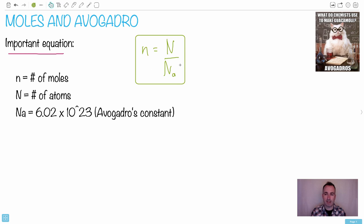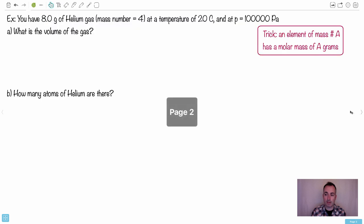I hope that'll make some sense. What I'll do is show you an example now, one that showed up on an exam that doesn't seem quite so simple. So we have an example here where you have eight grams of helium gas, and helium has a mass number of four.